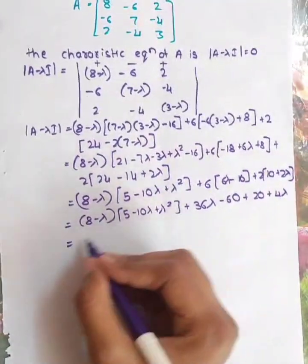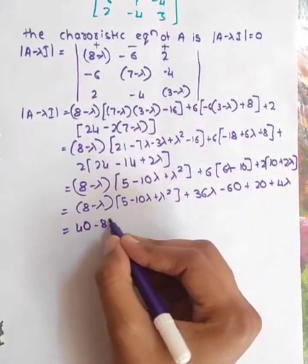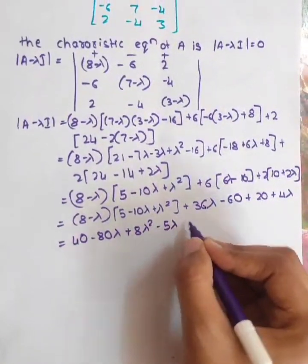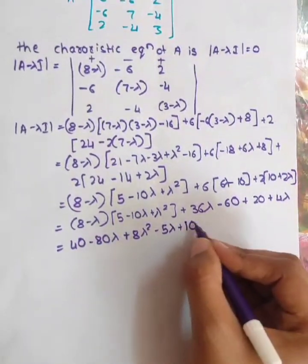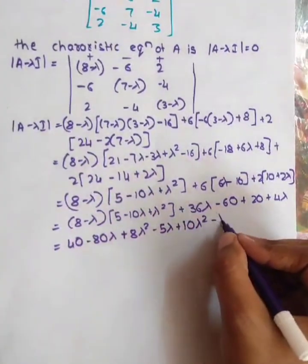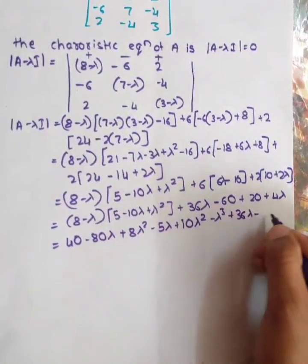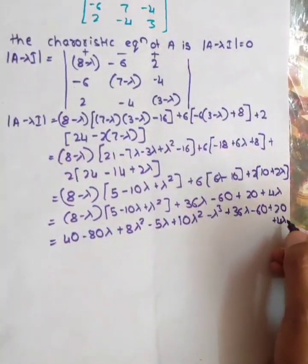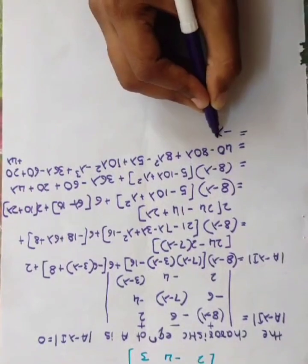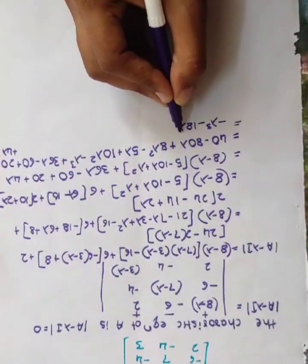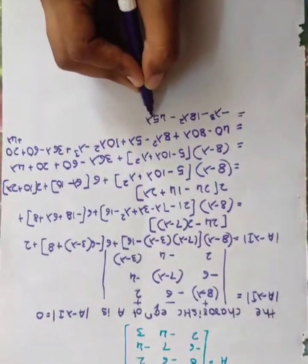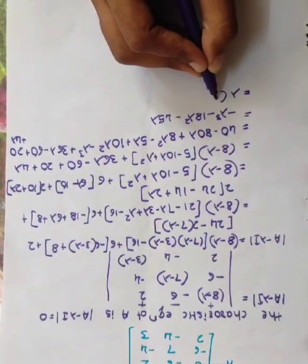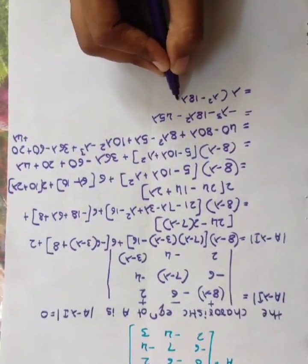Then we get 8 minus lambda times 5, giving 40 minus 80 lambda plus 8 lambda squared, minus 40 lambda, minus of minus plus 10 lambda squared. Then minus lambda cubed plus 36 lambda minus 60 plus 20 plus 4 lambda. Collecting terms: minus lambda cubed minus 18 lambda squared minus 45 lambda.